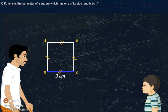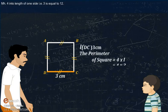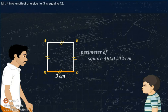Okay. Tell me the perimeter of a square which has one of its sides length 3 centimeters. 4 into length of one side, that is 4 into 3 is equal to 12. Correct, my dear.